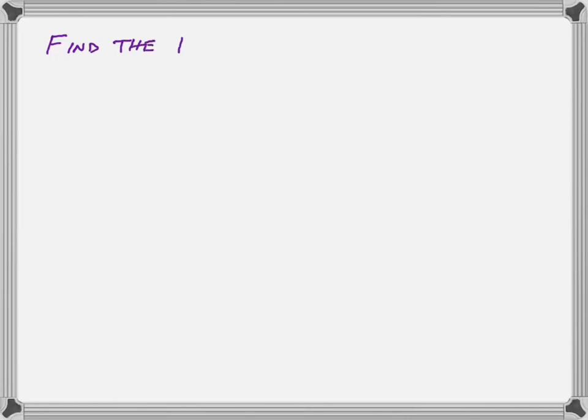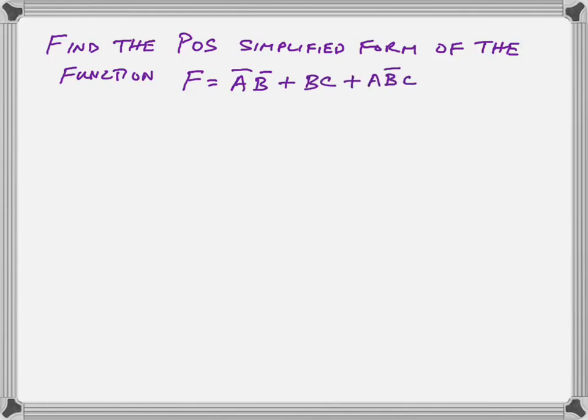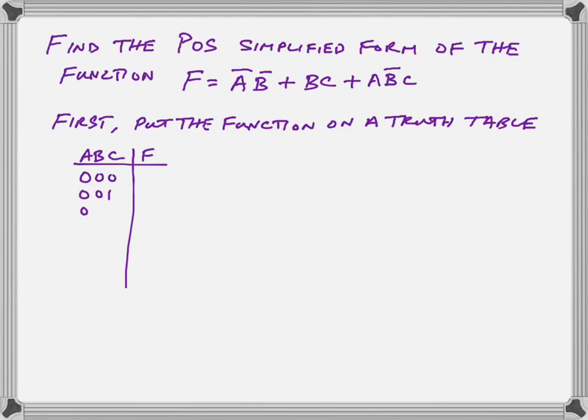So let's do some examples quickly. We want to find the product of sums simplified form of a sum of products expression. Our expression is written in sum of products, as you can see, but we want to find the product of sums form. So the first thing to do is to put it on a truth table. That's what we do. So we draw our truth table and we put on the ones.